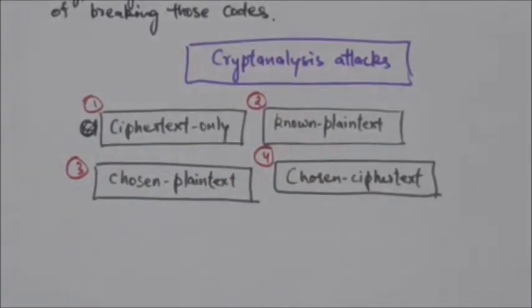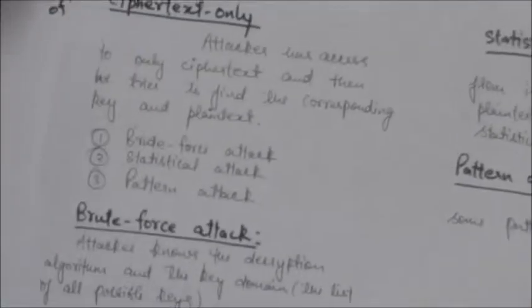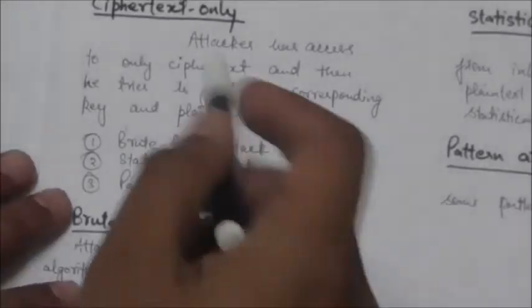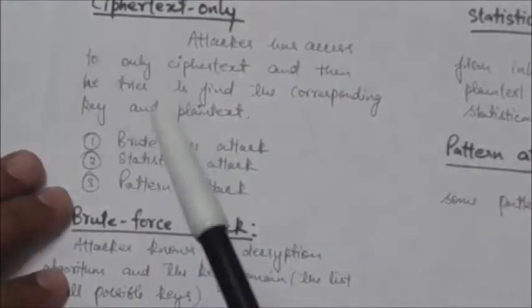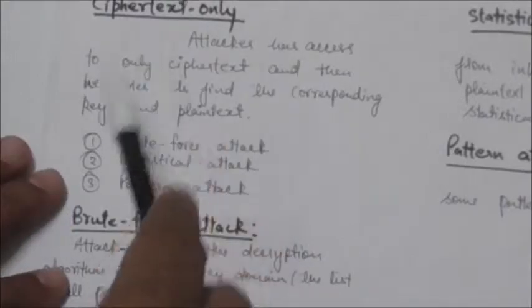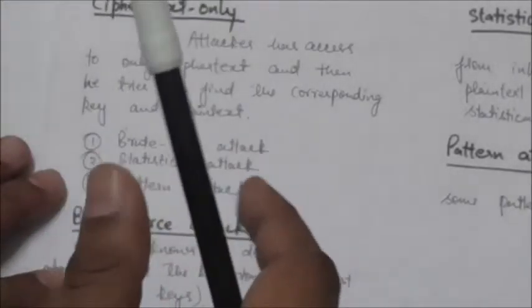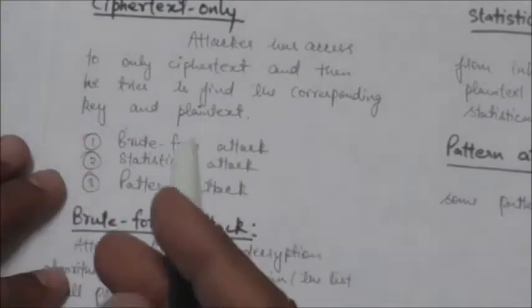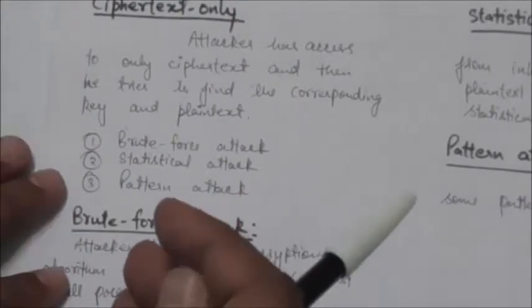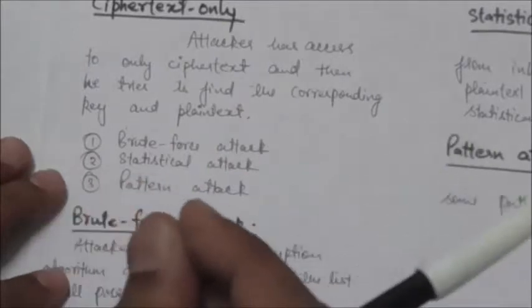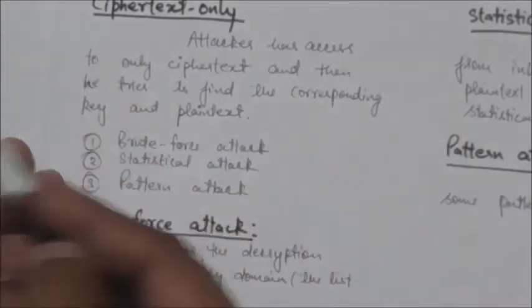First of all we will study about the ciphertext only attack. In this type of attack, the attacker has access to only some ciphertext and tries to find the corresponding key and plaintext.